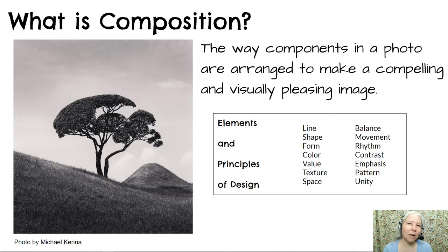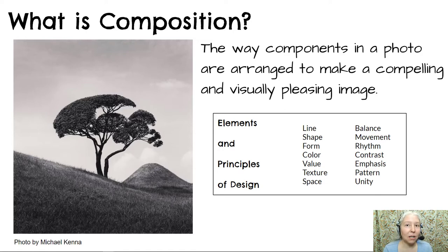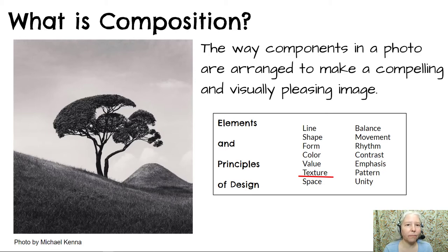I'm going to demonstrate how I see the composition of this photo using this vocabulary. One of the first things that pops out to me is the use of texture. We have this kind of pokey, crunchy grass in the foreground that looks kind of dried out. The leaves on the tree are also creating a nice texture. And barely visible in the background, I see some nice fluffy clouds.